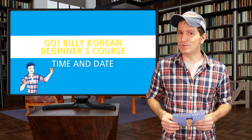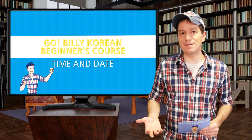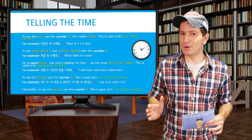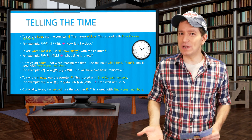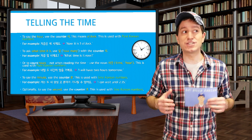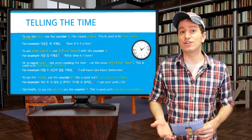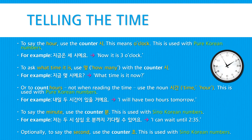Welcome back. In this lesson we're going to learn how to say the time and the date. The first thing we're going to look at is how to say the hour. You're going to use the counter 시, which means o'clock, and you're going to use it together with pure Korean numbers. For example: 지금은 세시예요 — now it is three o'clock.